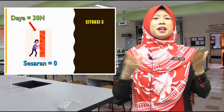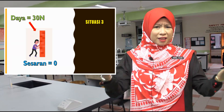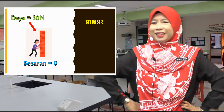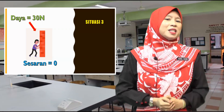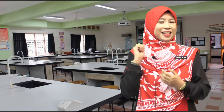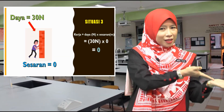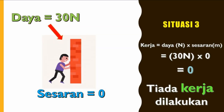Situasi ketiga: seorang lelaki sedang bertungkus-lumus menolak dinding dengan daya 30 Newton. Adakah dinding itu akan bergerak? Sudah tentulah tidak. Tiada sebarang penyesaran dalam situasi ini. Mari kita gantikan nilai daya 30 Newton dan sesaran kosong ke dalam formula. Jawapannya ialah kosong. Ini membuktikan tiada kerja yang dilakukan.